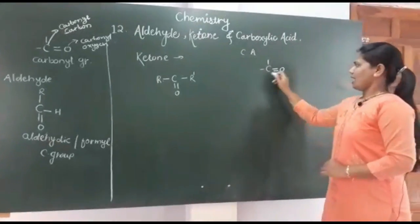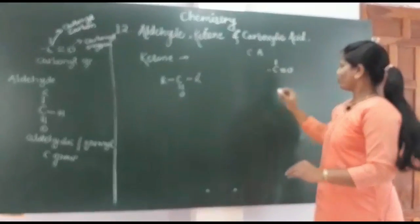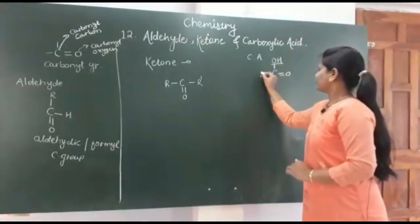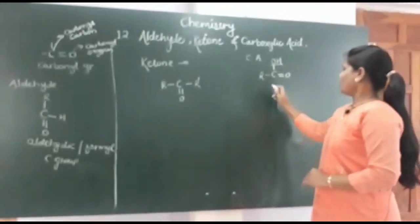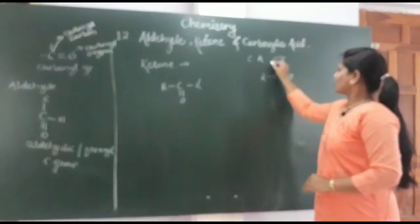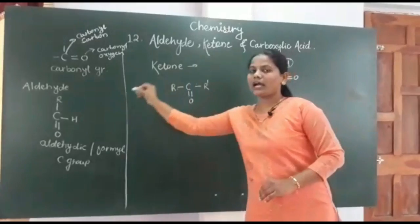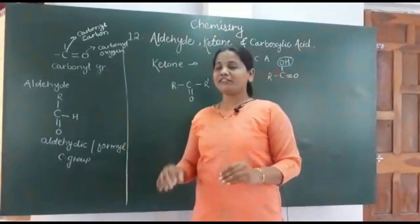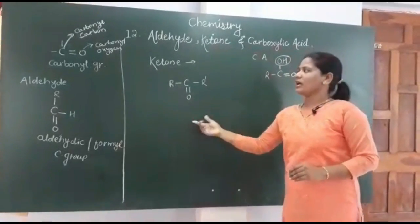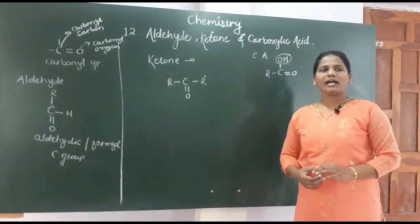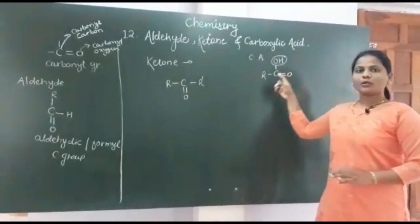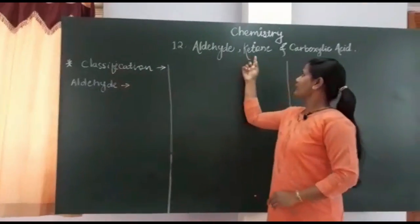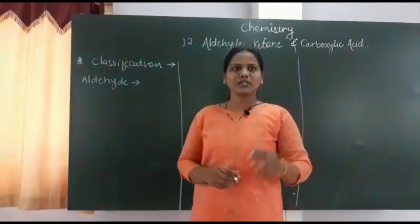Now let us see carboxylic acid: C double bond O as the carbonyl group. One valency of the carbon is compulsorily satisfied with the OH group (the hydroxy group), and one valency is satisfied with the alkyl group. In the carboxylic acid, the OH group makes it different from ketone and aldehyde, so carboxylic acid shows some chemical and physical properties different from aldehyde and ketone. This is the introductory part, and the C double bond O carbonyl group is the very important functional group in organic chemistry.